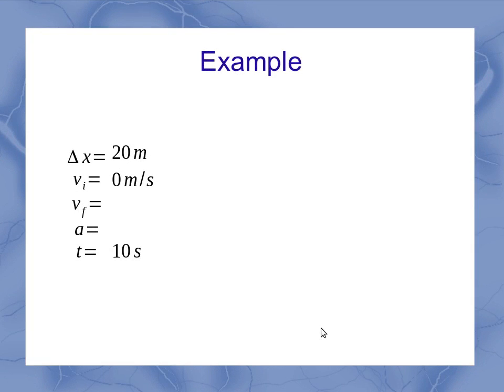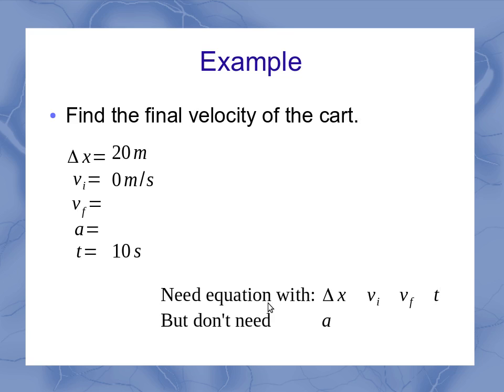So let's say for now, for this example, that in addition to giving us the setup, it asked us to find the final velocity of the cart. So that means we need the equation with delta x, vi, vf, and t, but we don't need a.